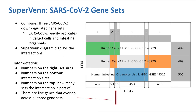This is a super Venn diagram used to compare three SARS-CoV-2 downregulated gene sets. Each of these gene sets is a human cell line that has been infected with SARS-CoV-2. SARS-CoV-2 replicates a lot in Calu-3 cells and human intestinal organoid cells, which is why studies have looked into these cell lines to understand how the virus works. Calu-3 cells are a human lung cancer cell line involved with mucus production, and patients infected with SARS-CoV-2 tend to have respiratory issues as well as gastrointestinal symptoms, which is why we look into human intestinal organoid cells as well.